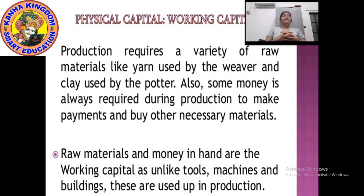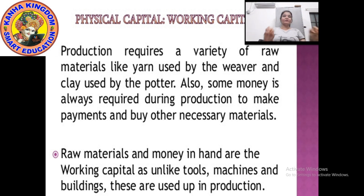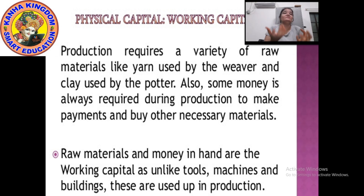Also to buy other necessary materials when you are under production — sometimes the tools may not work, you have to call the mechanic, so for that you need money in hand. Raw materials and money in hand are the working capital — unlike tools, machines and buildings, these are used up in production. Tools, machines and buildings are going to be there for a long time, but money and raw material are going to be used up daily in the production.